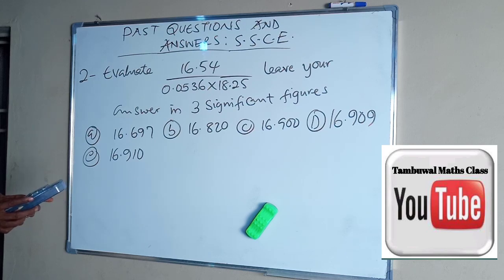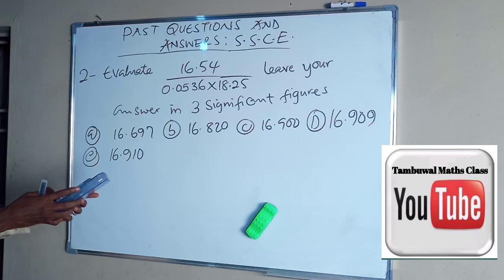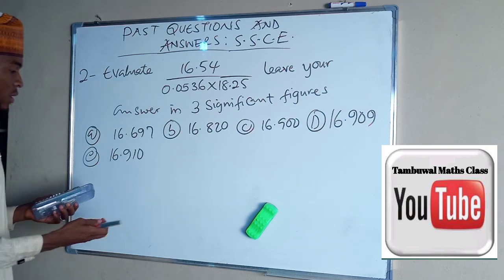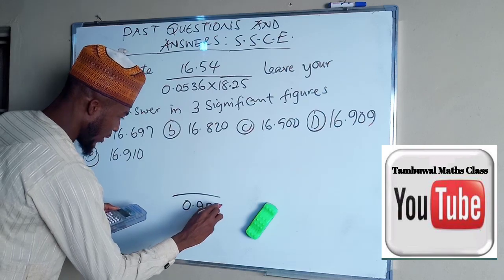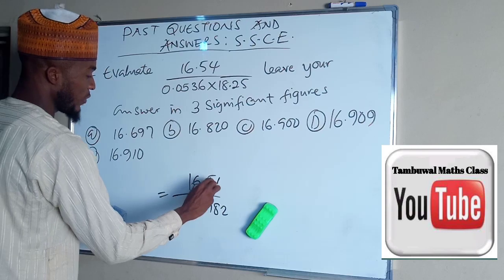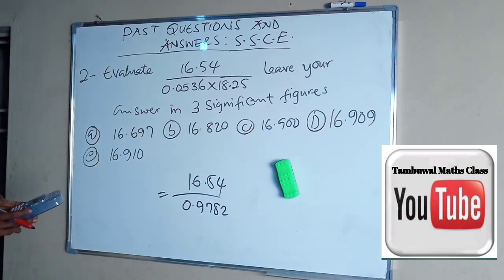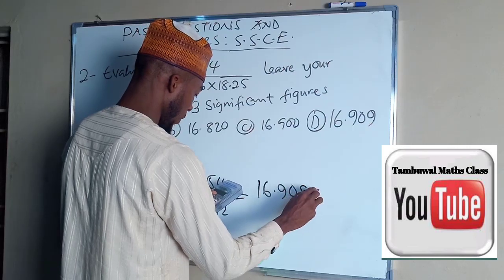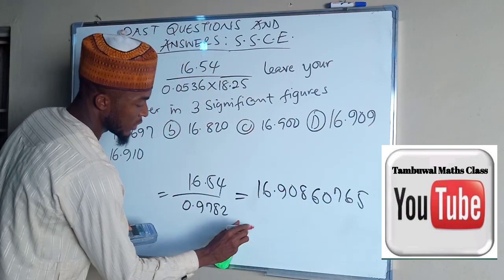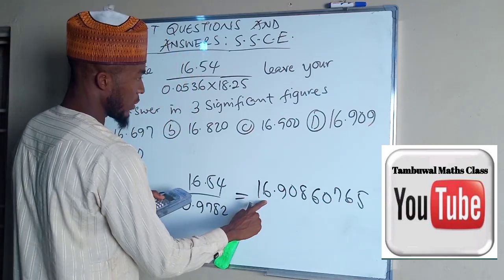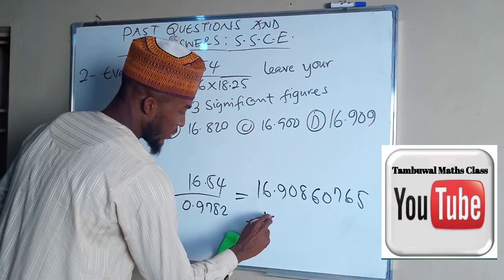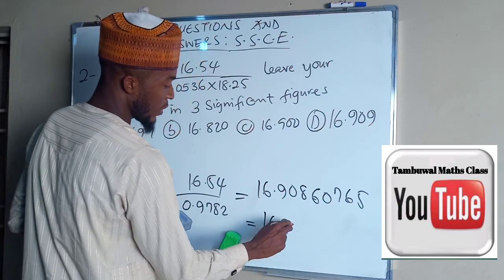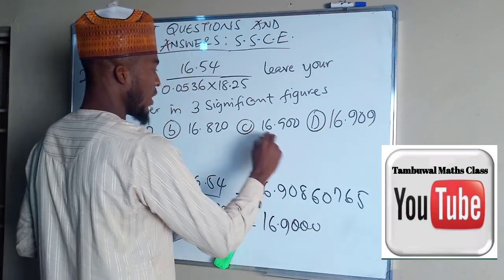So we can say 0.0536 multiplied by 18.25 and this is what I got, 0.9782. And this is 16.54, and we simplify this as 16.54 divided by this and we end up having 16.90860765. And this will give us in 3 significant figures, 1, 2, 3, we have 16.9. We can set the remaining numbers to be equal to 0, 0, 0, 0 and this is the right option.